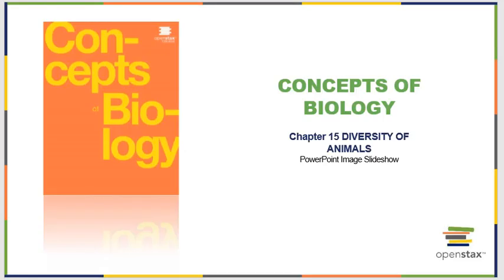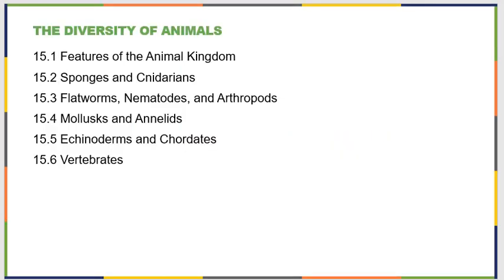Chapter 15 is about the diversity of animals. It is a very long chapter containing a lot of information. So if you read the chapter, take notes, and then watch the video, you're going to notice they leave a lot of stuff out. That's because this video would be two hours long to contain all the information, and it's just not necessary.